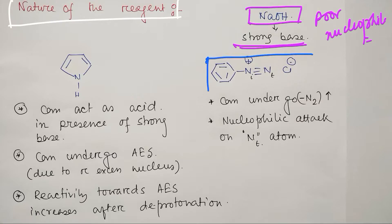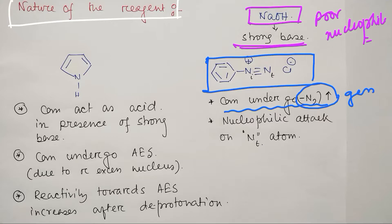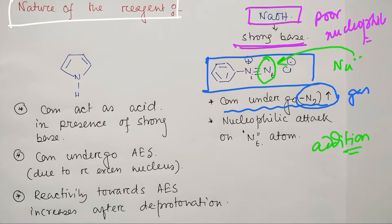Now let's look at benzene diazonium chloride. One type of reaction it can undergo is nitrogen elimination, because N₂ is a very stable molecule and a gas, so it will prefer to eliminate from the reaction medium easily. Another type of reaction possible is nucleophilic attack on the terminal nitrogen — the nucleophile can attack here, and after that it results in an addition reaction. You have already read about diazotization followed by dye preparation — that is another example.